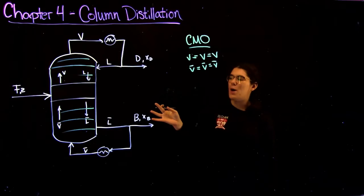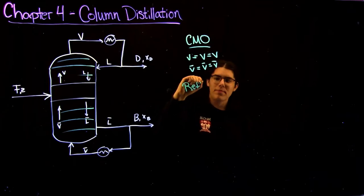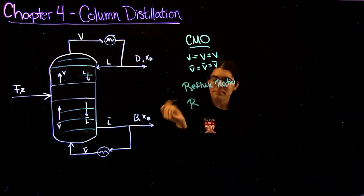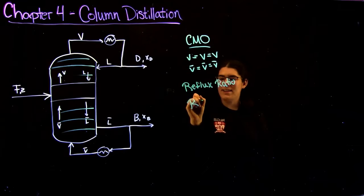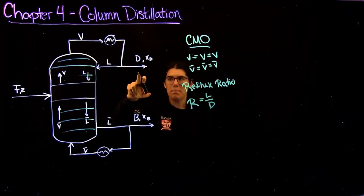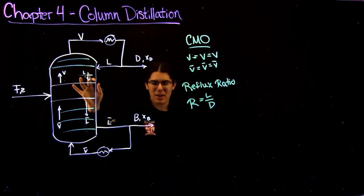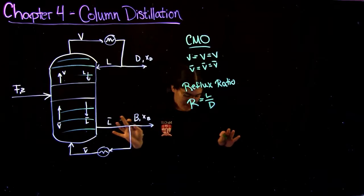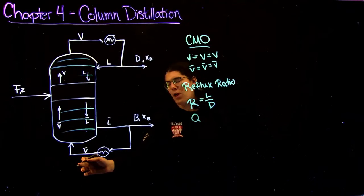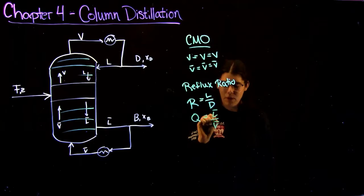Some other definitions that are usually used: something called the reflux ratio, usually just R, defined as L over D. That's this L over this D, and it will be useful later on when we derive our operating lines for the top. Analogously, something called Q — it's basically the reflux ratio but for the bottom, so that's just L-bar over V-bar.